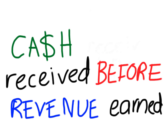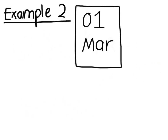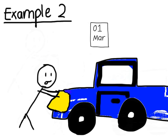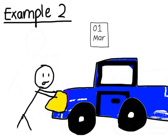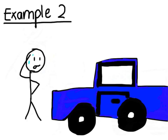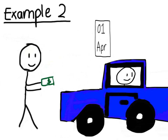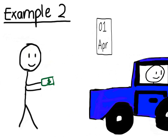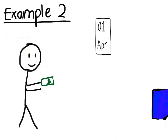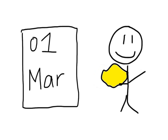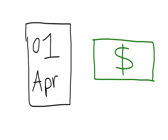Let's look at another example. Example 2: on the 1st of March, your friend asks you to look after his car and also wash it for him, telling you he will pay you later. It is not until the 1st of April that your friend comes to collect his car and pay you for your services. So it was during March that you provided the service — the car wash — but it was not until April that you received the money for it.